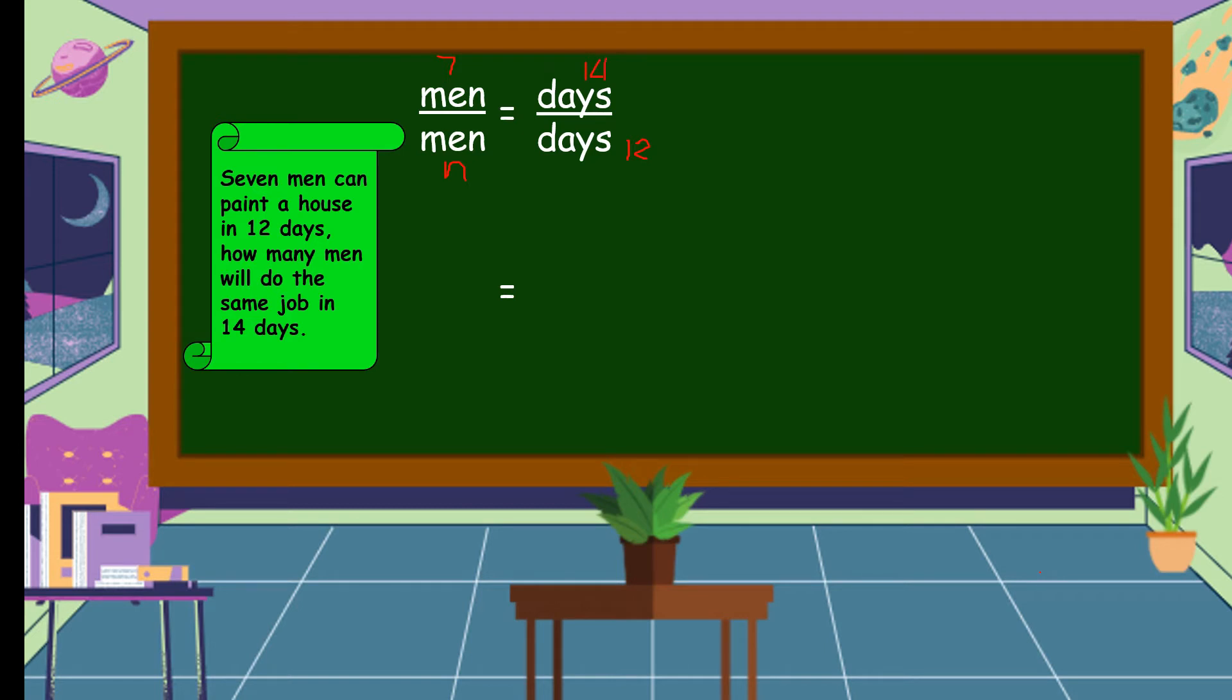Then we're going to write also in an opposite side. This is the way how we're going to write the given in an inverse proportion. So, 7 over N is equal to 14 over 12.